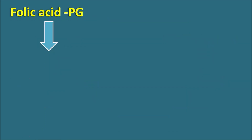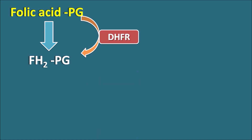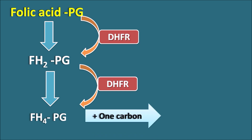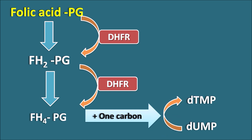Folic acid polyglutamates are converted into dihydrofolic acid polyglutamates by dihydrofolate reductase enzyme, which then further converts them into tetrahydrofolic acid polyglutamate form. Dihydrofolate reductase is therefore a key enzyme converting folic acid into tetrahydrofolic acid. This tetrahydrofolic acid in polyglutamate form combines with a one-carbon unit and converts dUMP into dTMP — deoxyuridine monophosphate into deoxythymidine monophosphate — which is then incorporated into DNA.